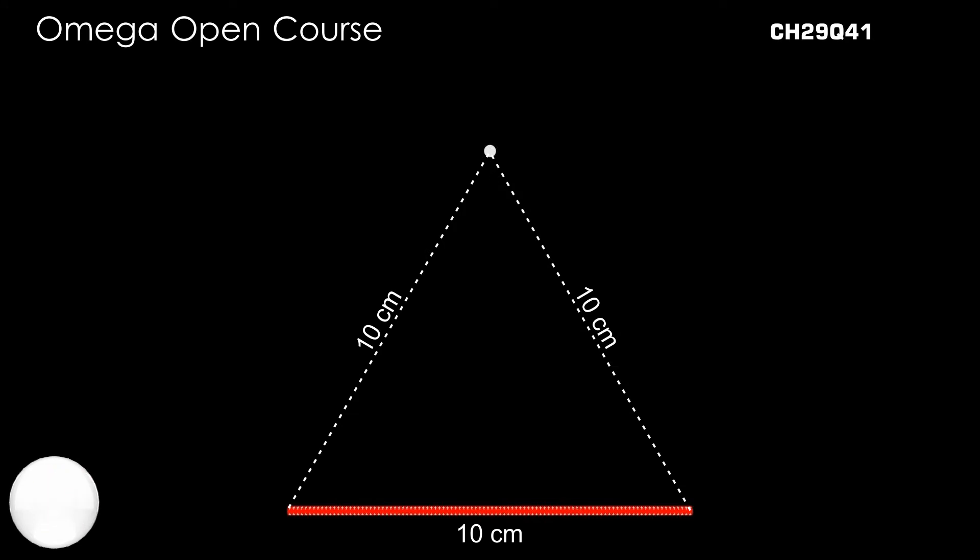As the length of the rod and the distance of the point from the ends of the rod are equal, the ends of the rod subtend an angle 60 degree at the point. Thus, the perpendicular distance of the rod from the point is 10 cos 30 degree or 5 root 3 cm.